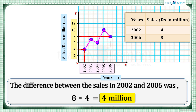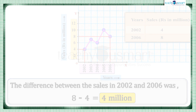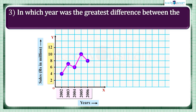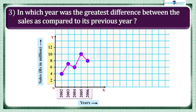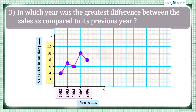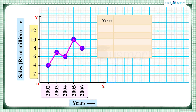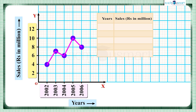Now we move to the next question: in which year was the greatest difference between the sales as compared to its previous year? From the graph, we can see the sales figures for each year. In 2002, the sales were 4 million.